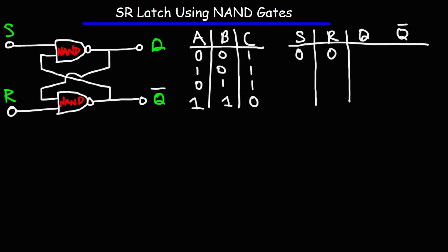When S and R are both 0, this is an invalid condition — this state is not used. What actually happens is that both Q and Q bar will be 1. It makes sense why that's invalid, because Q should always be opposite to Q bar. But in actuality, when both inputs are 0, Q and Q bar will both be 1. When you look up truth tables, you'll see 'not used' or 'invalid condition.'